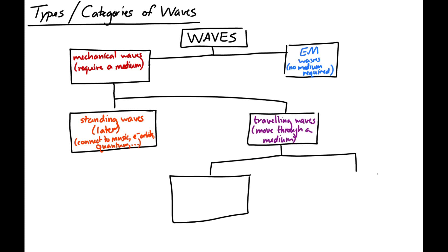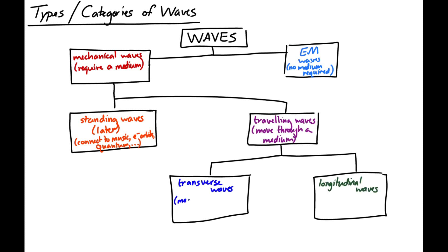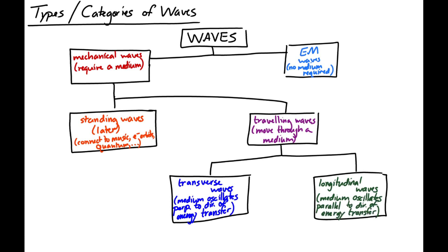Traveling waves can be further split into two categories: transverse traveling waves and longitudinal traveling waves. Transverse waves are waves where the medium oscillates perpendicular to the direction of energy transfer, or direction of propagation. Longitudinal waves are waves where the medium oscillates parallel to the direction of energy transfer or propagation. We can see these two types if we think about a slinky.